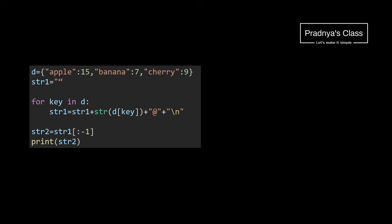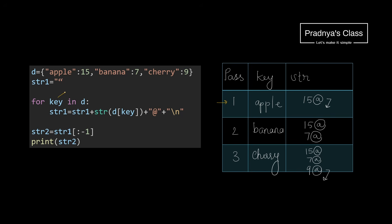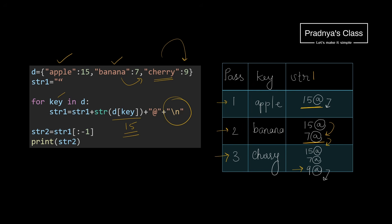Let's work out with the dry run table. In pass 1, the key will be 'apple' and its corresponding value is 15. So 15 will get concatenated with the '@' symbol, and using the new line character we come to the next line. In pass 2, the key will be 'banana' and the corresponding value is 7. The string is now '15@
' and we will get '7@
'. In pass 3, the key is 'cherry' and the value is 9. We will get '9@
'.